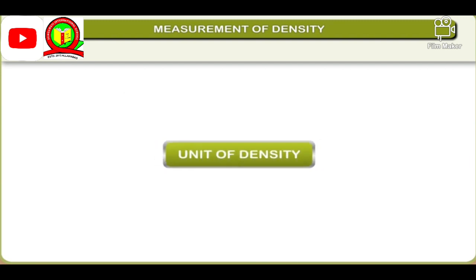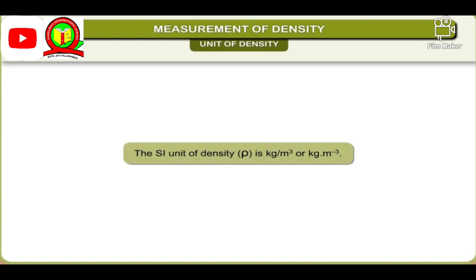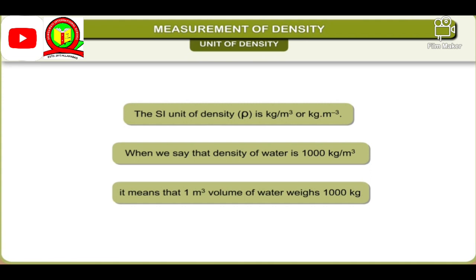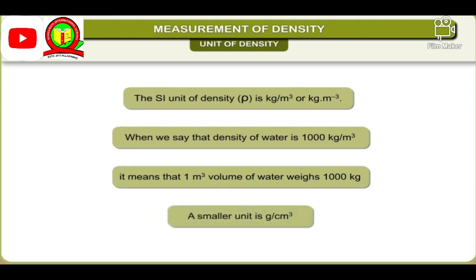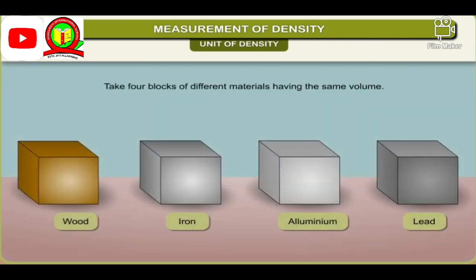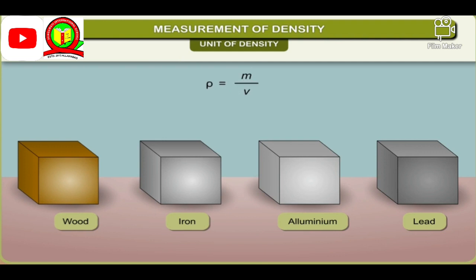The SI unit of density ρ is kilogram per cubic meter, or kg·m⁻³. When we say that the density of water is 1000 kg/m³, it means that 1 cubic meter of water has a mass of 1000 kilograms. A smaller unit is gram per cubic centimeter. Activity: To understand the meaning of density, take 4 blocks of different materials having the same volume, weigh them and compare their masses. Find the densities of each using ρ = M/V and list them in increasing and decreasing order. Also find out which material is most dense.